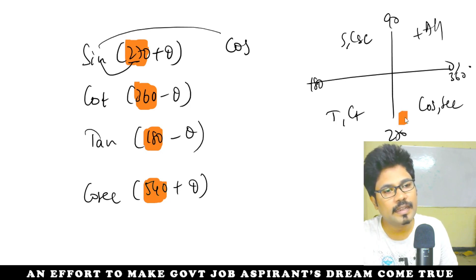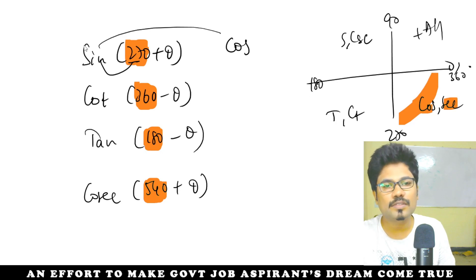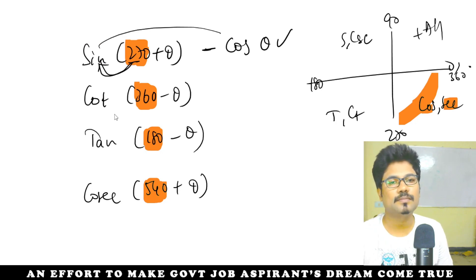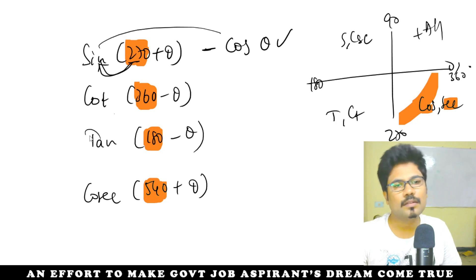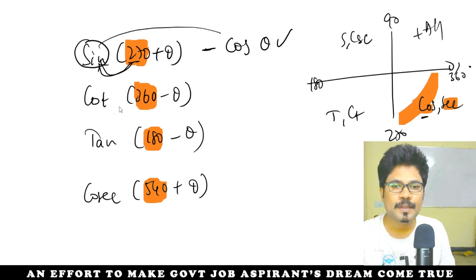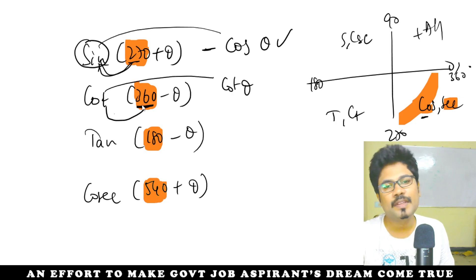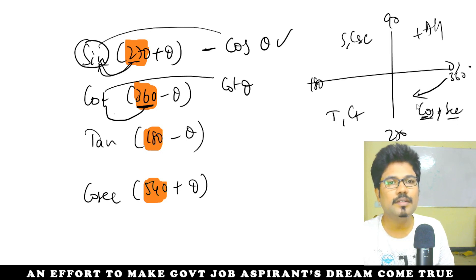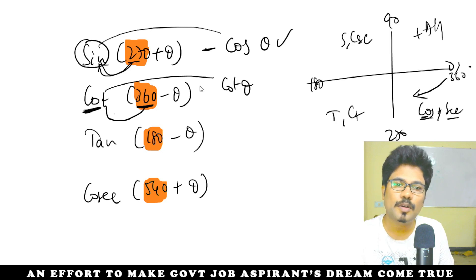For 270 plus theta, 360 plus theta, 720 plus theta: this is cos. In 270, you can see the target here. Cos is negative there, so it is minus. For 270 plus theta, sin is positive. For 360 minus theta — even multiple — the function name stays the same. In the fourth quadrant, cos and secant are positive.